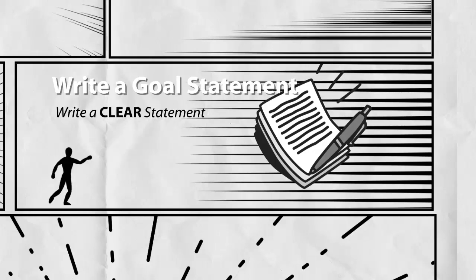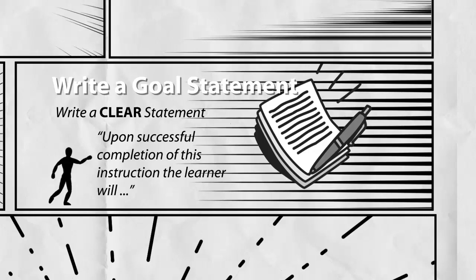I often like to use the sentence, upon successful completion of this instruction, the learner will, and fill in the list of behaviors after the will. I'm not necessarily saying that all goal statements should begin this way, but I found it as a useful technique to help me begin to write clear goal statements.